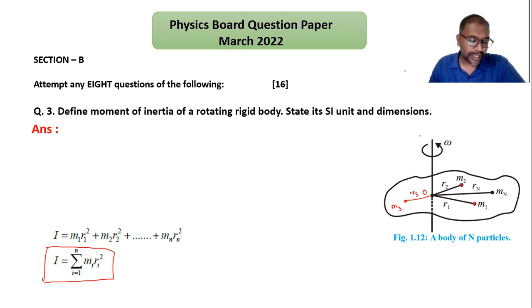Then the moment of inertia of this body can be written as m1×r1² + m2×r2² + m3×r3² plus dot dot dot mn×rn². This formula we have to write in words, then we get the definition of moment of inertia.